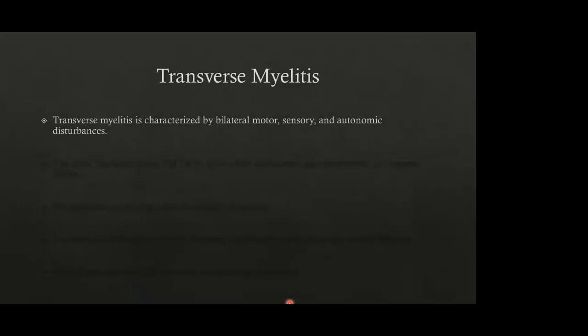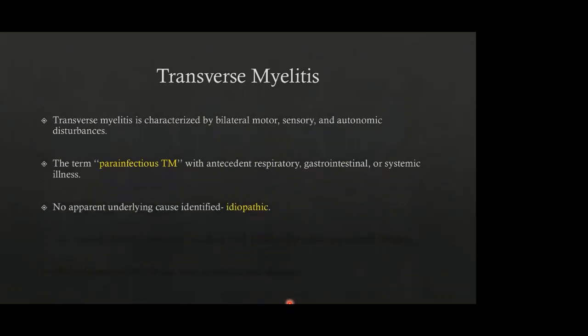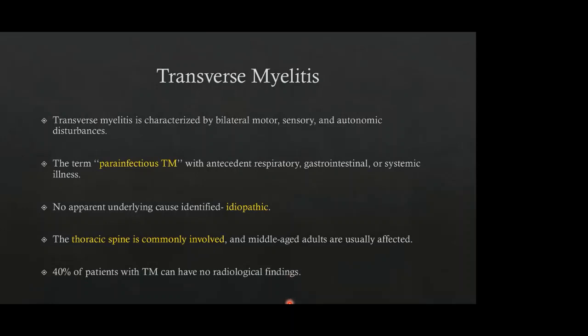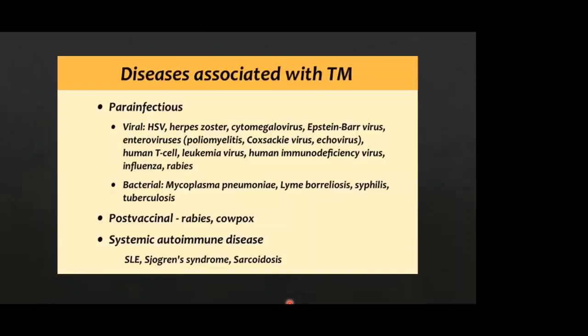Transverse myelitis is characterized by bilateral motor, sensory, and autonomic disturbances. A para-infectious cause is usually implicated; when no underlying cause is identified it is called idiopathic. The thoracic spine is most commonly involved and middle-aged adults are usually affected. Approximately 40% of patients can have radiologically occult disease. Associated conditions include viral and bacterial causes, post-vaccinal causes, and systemic autoimmune diseases such as lupus, Sjögren's, and sarcoidosis.